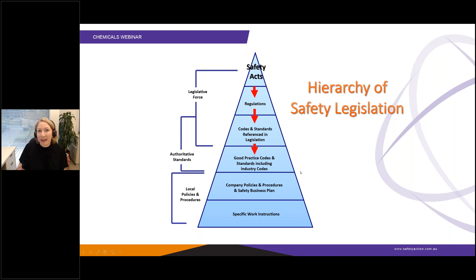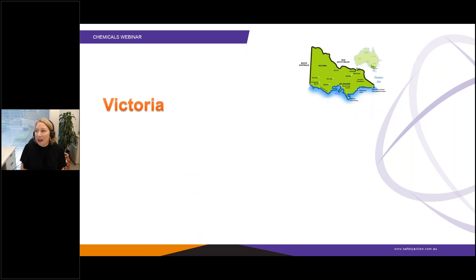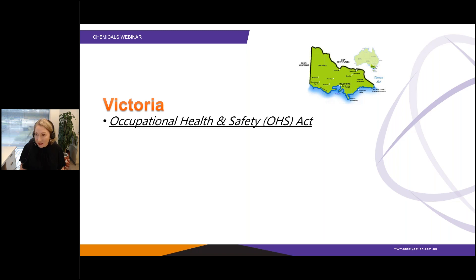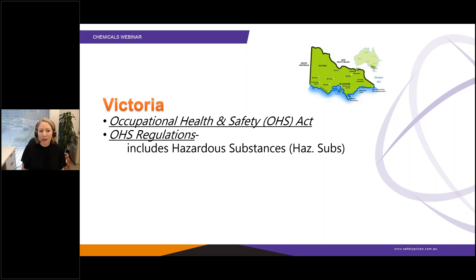There are also hundreds of Australian standards for chemicals, and you may also have company policies and procedures. This diagram shows how they all fit together. In Victoria, you might have heard the term OHS, which stands for the Occupational Health and Safety Act. We also have Occupational Health and Safety Regulations. For chemicals, the OHS regulations include details about hazardous substances — sometimes referred to as haz subs.